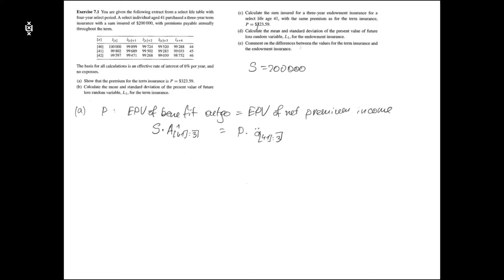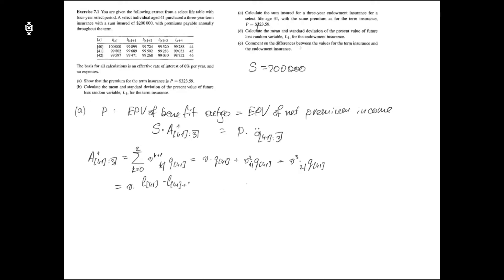The corresponding expected present value of term insurance and term annuity can be obtained from the given select life table. At this stage you should be able to find these values yourself from the given select life table. Without further explanation, let me just show you some intermediate steps for how you can obtain these values.